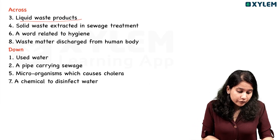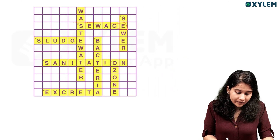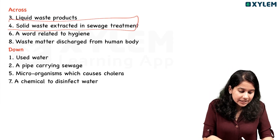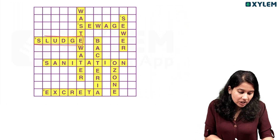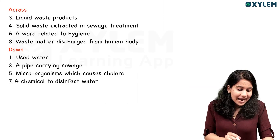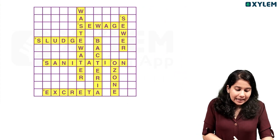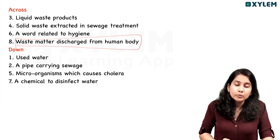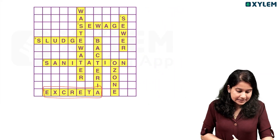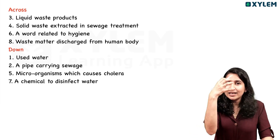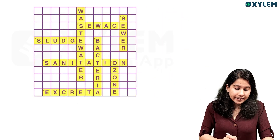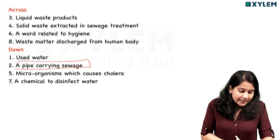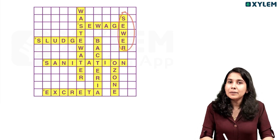The third is liquid waste product. The third is sewage waste. We have selected it. Solid waste extracted in sewage waste treatment — we have selected sludge. The sixth is a word related to hygiene — we have studied sanitation. This is waste matter discharged from the human body — this is excrete. This is used water — this is wastewater. A pipe carrying sewage waste — this is a sewer.